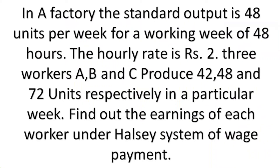Take a screenshot of the question or at least pause the video and write it down. Then when I'm explaining, please look at the question. In a factory, the standard output is 48 units per week for a working week of 48 hours. The hourly rate is rupees 2. There are 3 workers: A, B, and C. They produce 42, 48, and 72 units respectively. Find out the earnings of each worker under the Halsey system of wage payment.